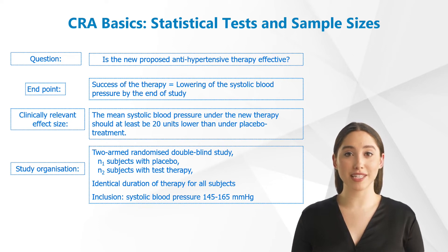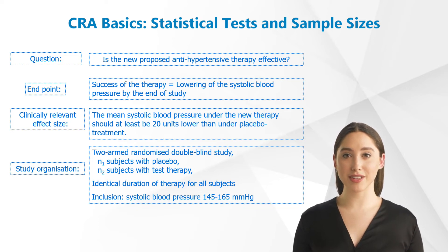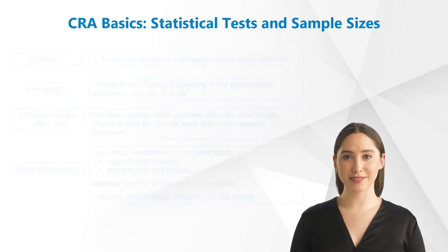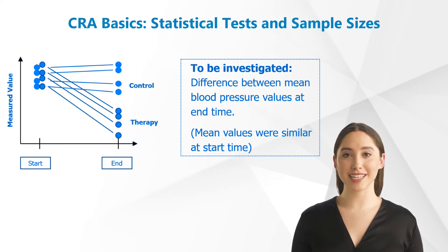A two-armed randomized double-blind study is selected with a certain number of subjects each treated with placebo or test therapy. For all subjects the duration of therapy is identical, as is the inclusion criterion, which in this case is an increased systolic blood pressure of between 145 and 165 mercury millimeters. Listed here are the blood pressure values of the subjects in the therapy group and the control group in the course of the study. The mean values of both groups are identical at baseline, but as time passes.